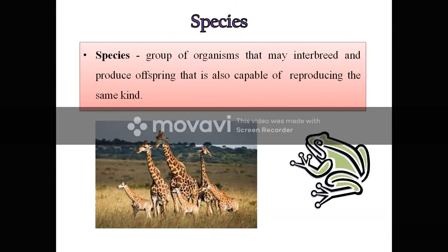Now we are going to study a few important terms used in ecosystem. The first term is species. Species is a group of organisms that may interbreed and produce offspring that is also capable of reproducing the same kind. Species can reproduce the same kind of offspring and can freely interbreed in nature.